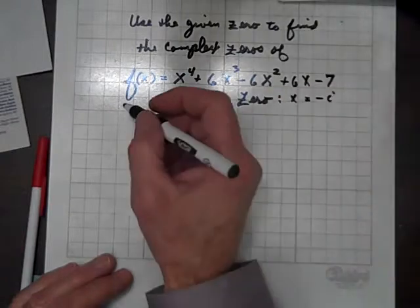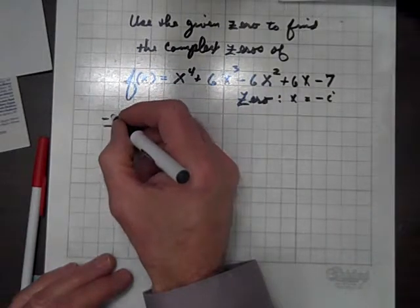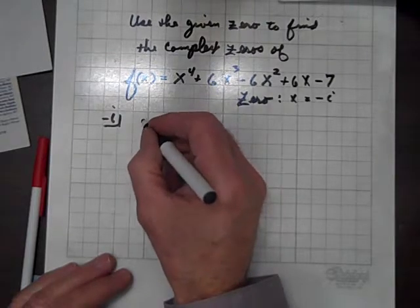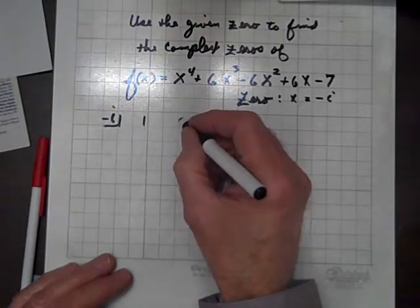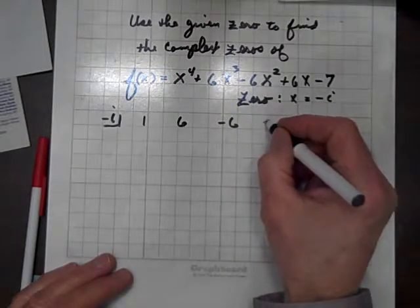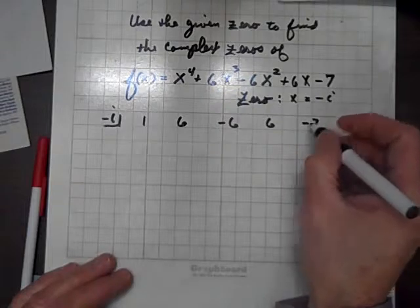Using synthetic division, we'll install our negative i in the box, list the coefficients: 1, 6, negative 6, 6, negative 7.